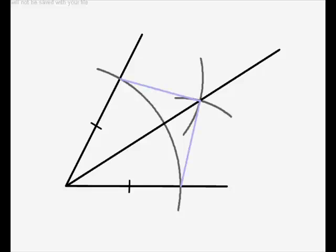Those two lines are equal. Why? Because we didn't change the opening on the compass for drawing them. So, if they had the same opening on the compass, they must be equal in length.